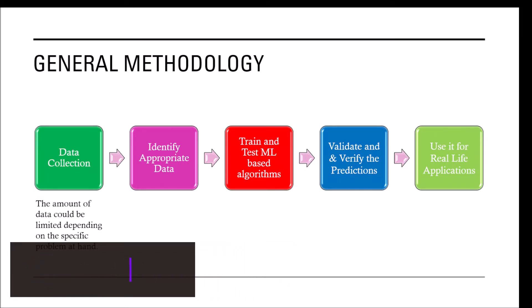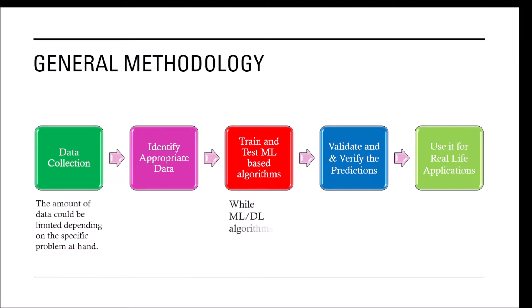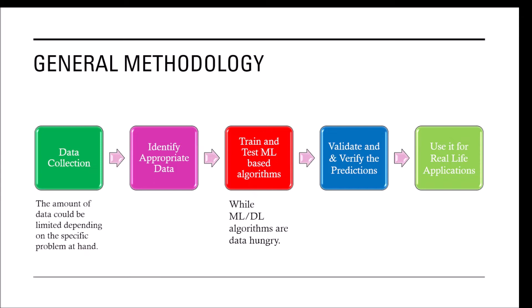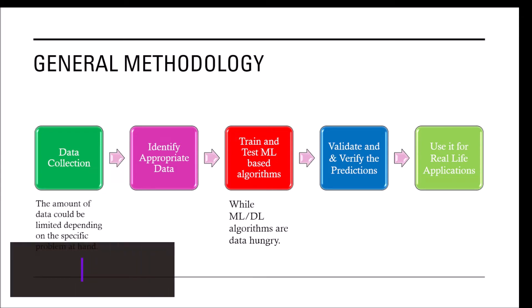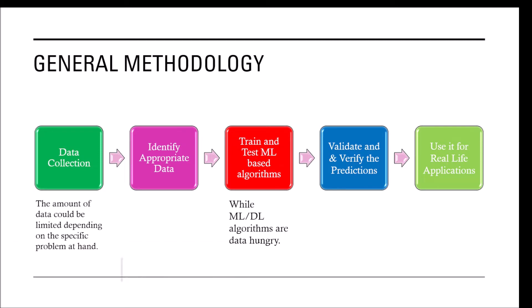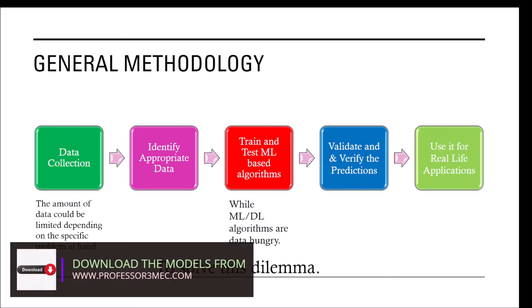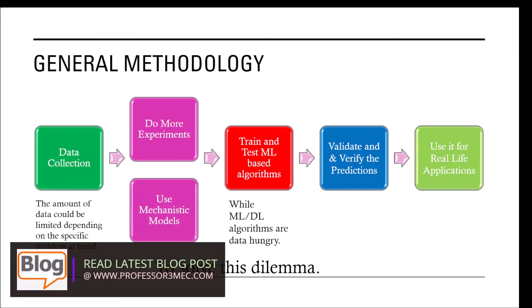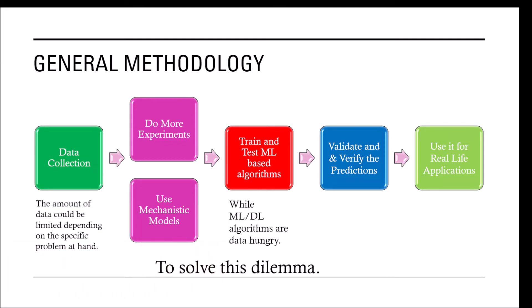If you look at the other side where you are trying to test and train the machine learning or deep learning algorithm, such machine learning and deep learning algorithms are data hungry. So they require a huge amount of data. To solve this dilemma we work on different ways of sorting this data problem out. In that case what we can do is we can do more experiments which might not be possible for many application areas or problems which you have.